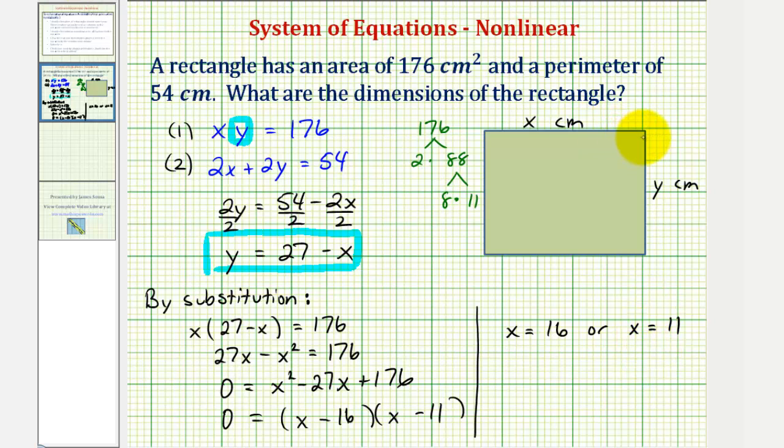From our diagram, it looks like x is longer, so let this length be 16 centimeters. Therefore, this length y would be 27 minus 16, or 11 centimeters.